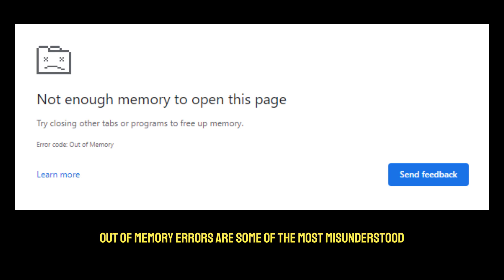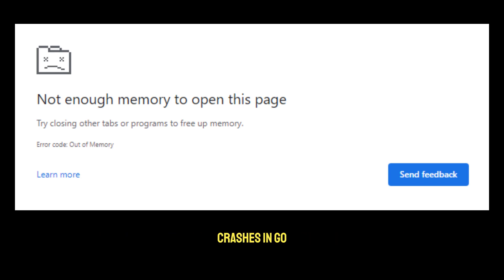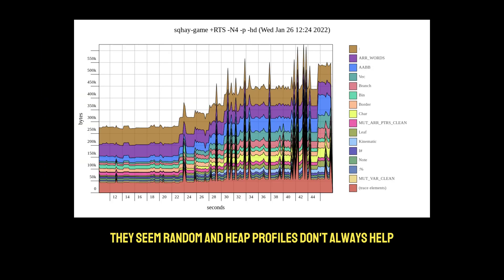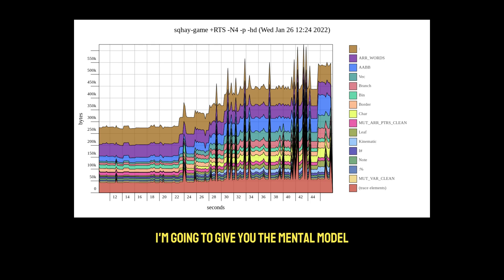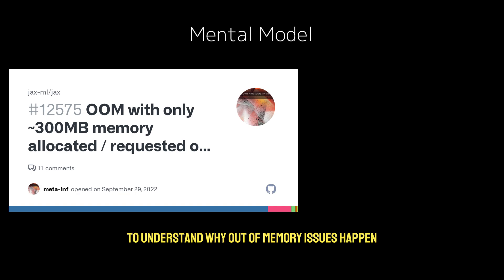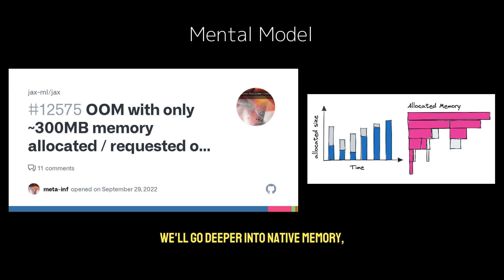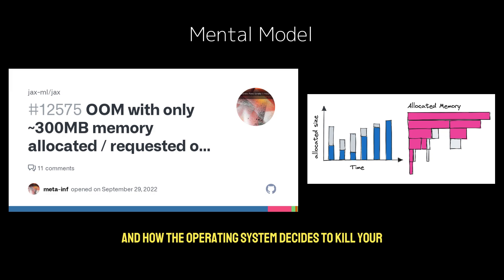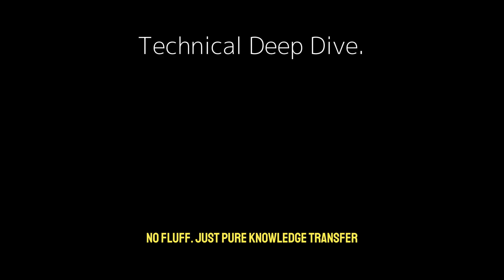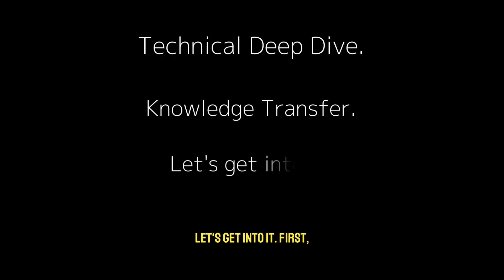Out-of-memory errors are some of the most misunderstood crashes in Go. They seem random, and heap profiles don't always help. Today I'm going to give you something more valuable than just commands or tools — the mental model to understand why out-of-memory issues happen. We'll go deeper into native memory, memory fragmentation, and how the operating system decides to kill your process. No fluff, just pure knowledge transfer.